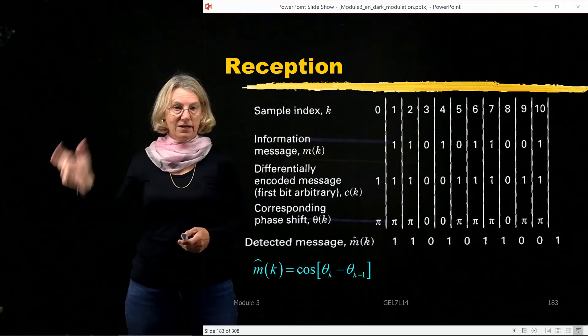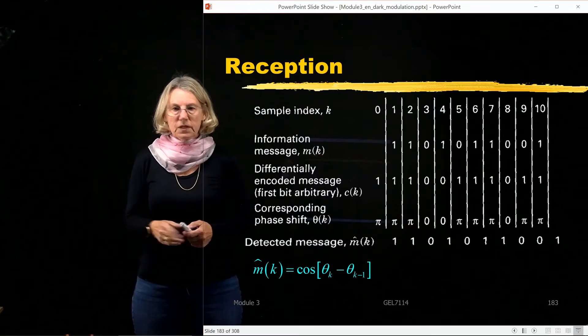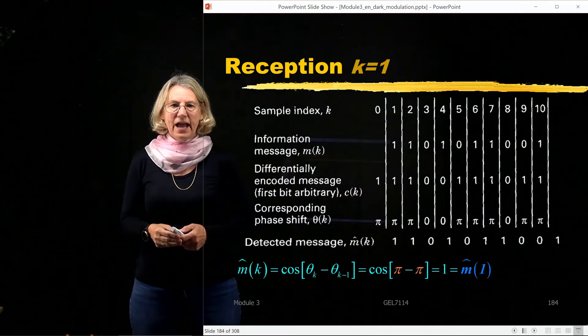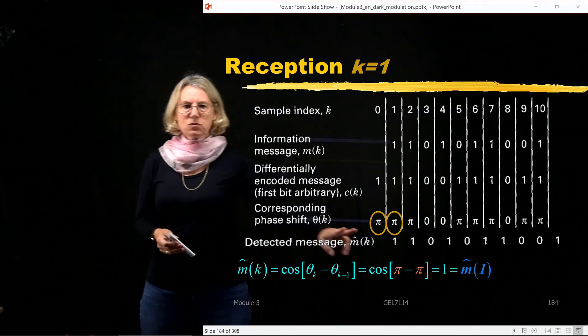I know that what will come out of that will be the cosine of the difference between the two phases, the phases which were transmitted in interval k and the phase that was transmitted in interval k-1. So if we look at what's happening at the reception, you can see that of course,